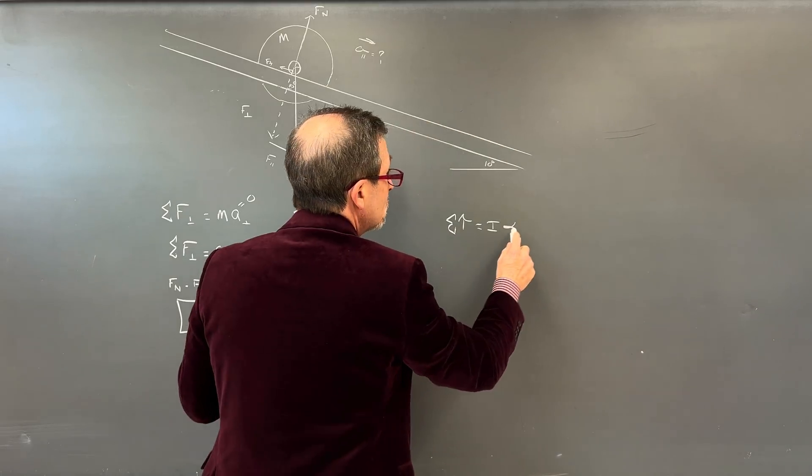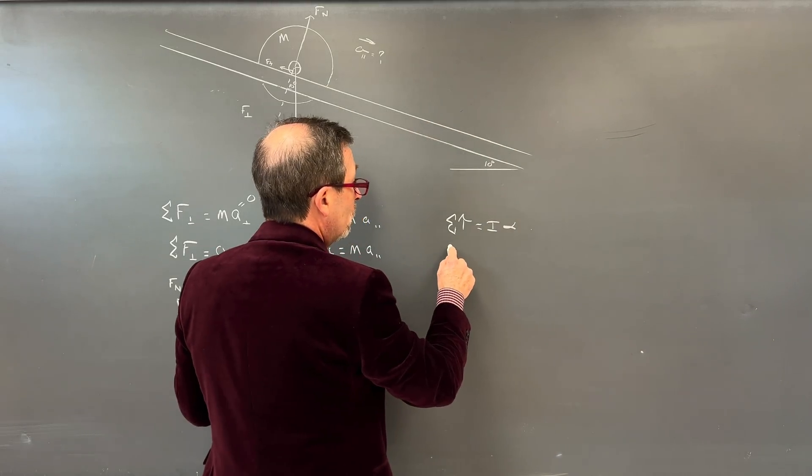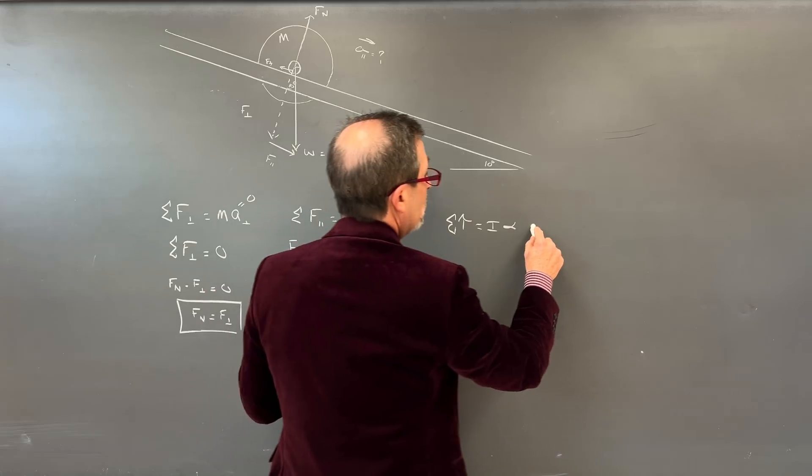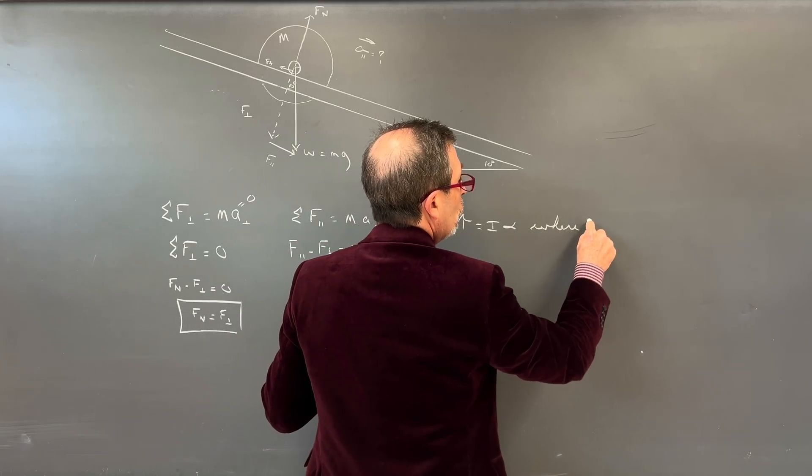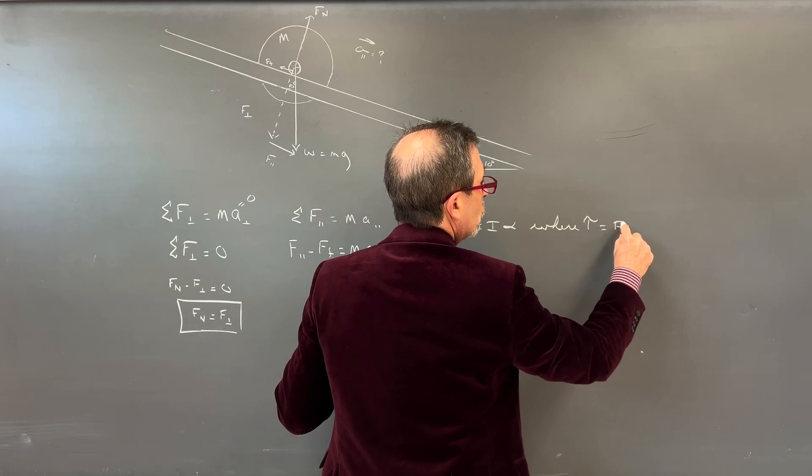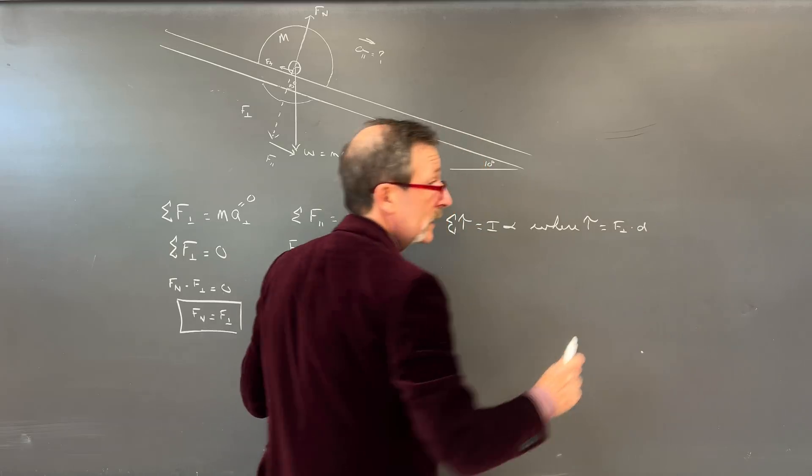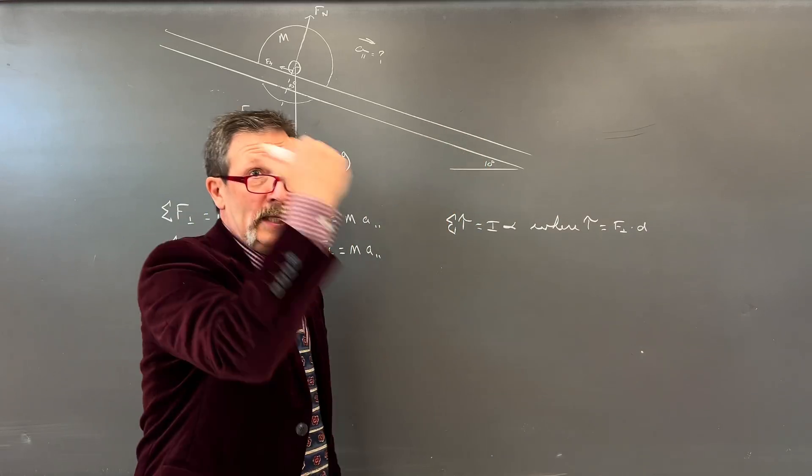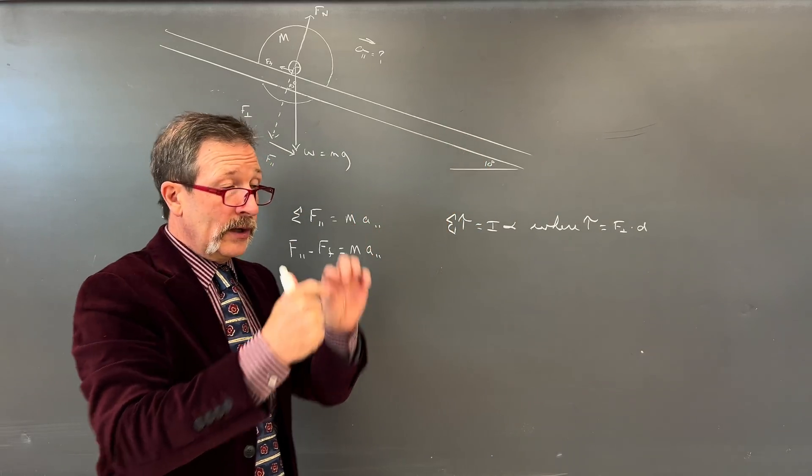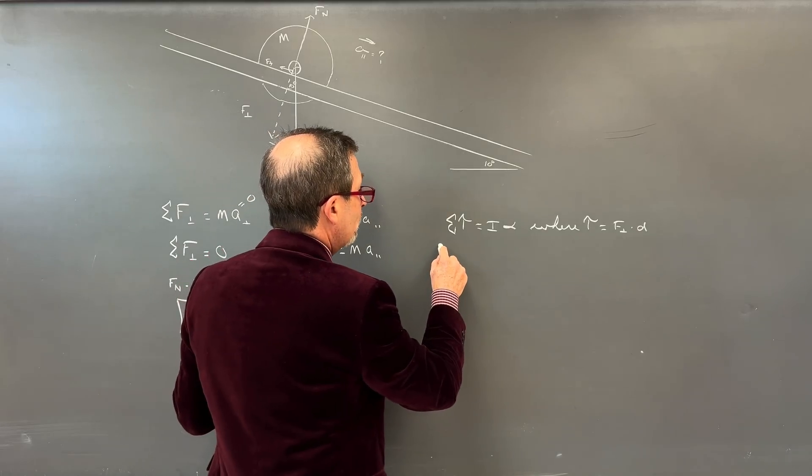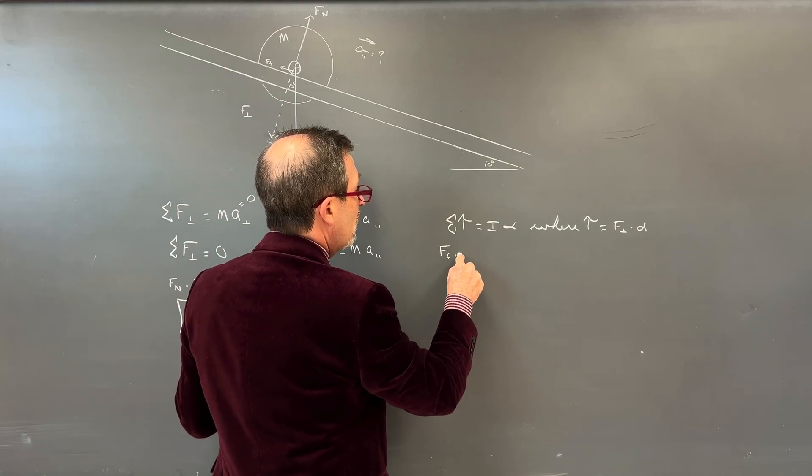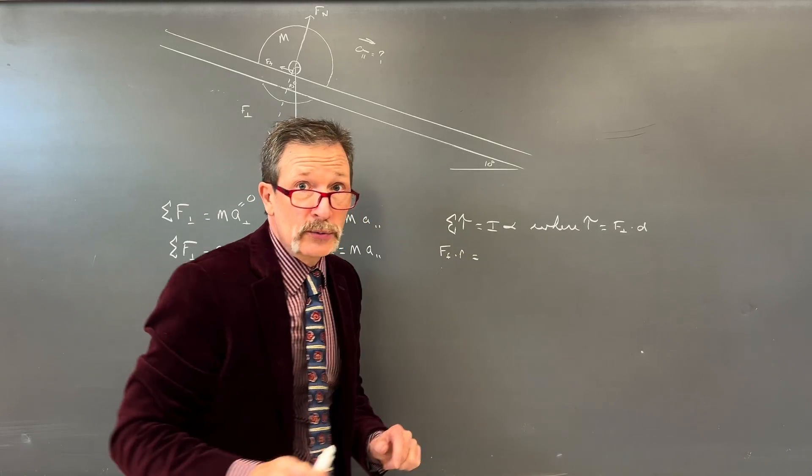We could say this force minus my force of friction. So I've got the force parallel minus the force of friction equals our MA parallel. That's maybe all we can do for there right now. Maybe we've got to go over and start working on our torques.